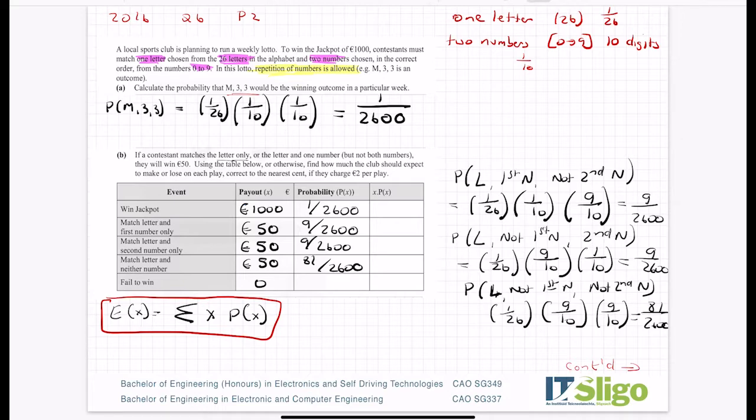So I'm adding up 1 and 9 and 9 and 81 and I'm getting 100. So I have 100 chances out of 2600 chances of winning something in this lottery. So minus that 100 chances from 2600 and I have 2500 chances of not winning anything at all. So my chances of winning this lottery are slim enough.